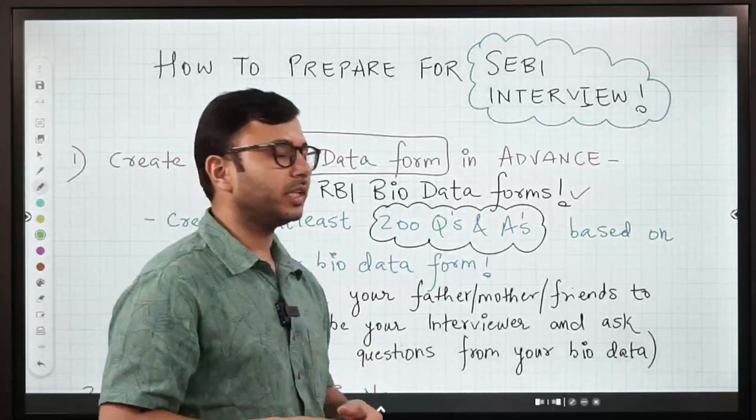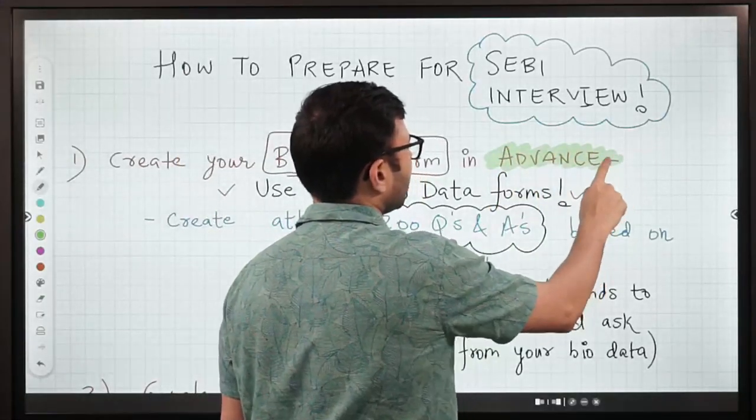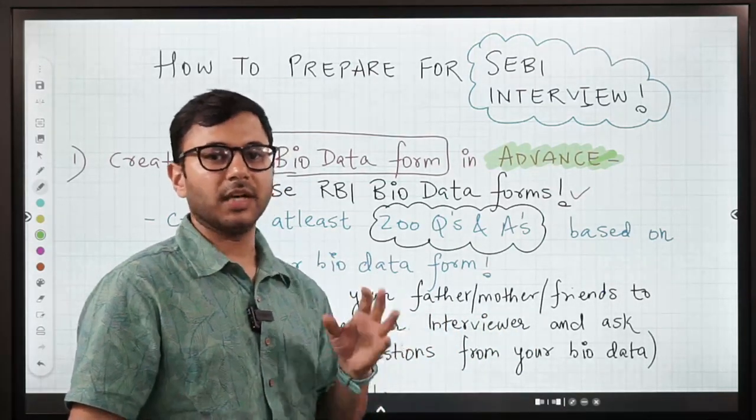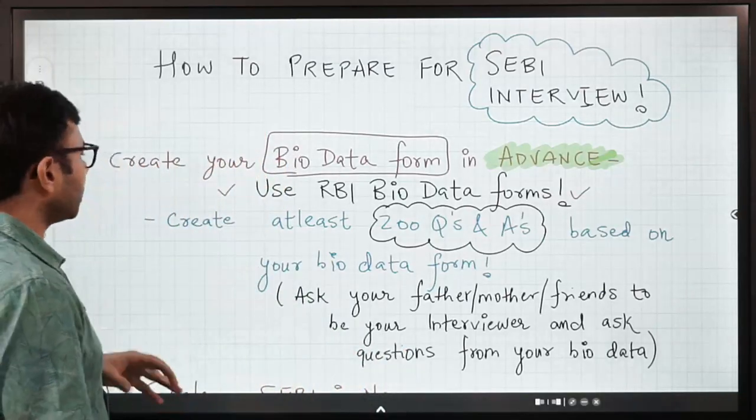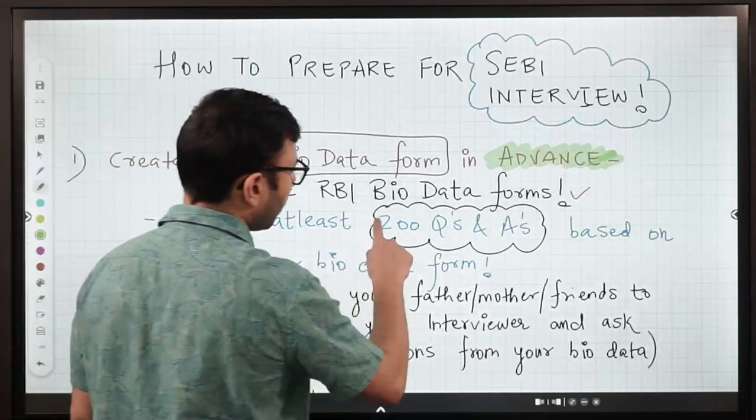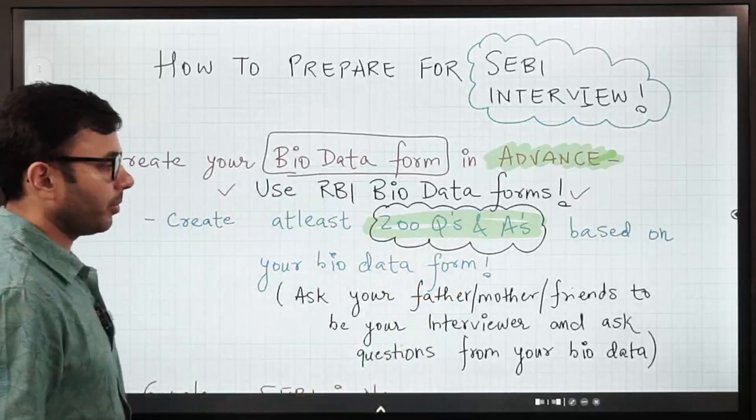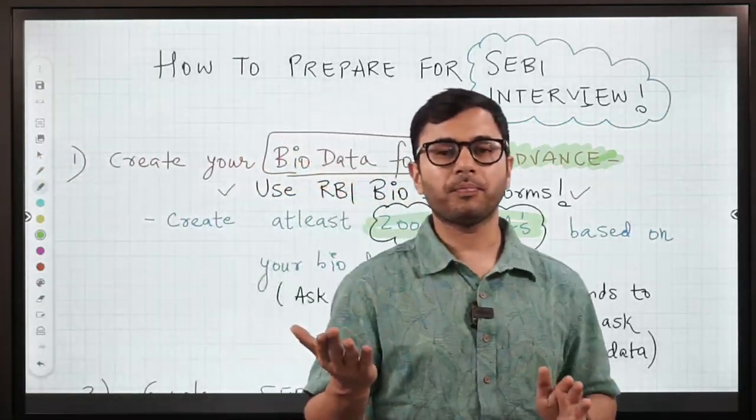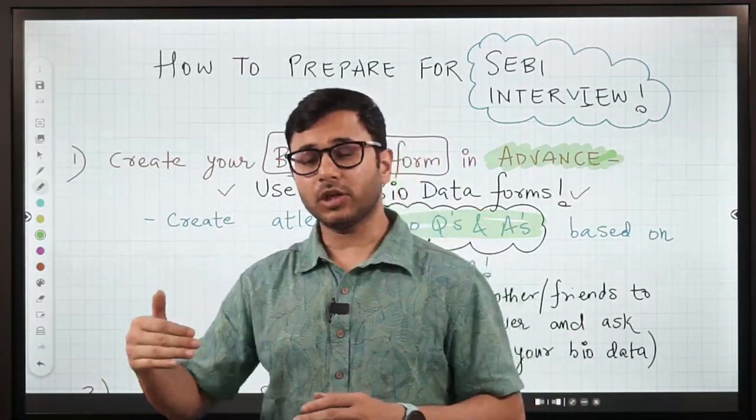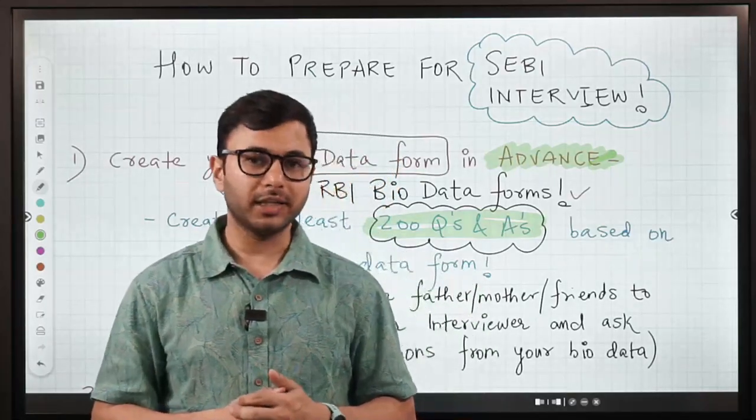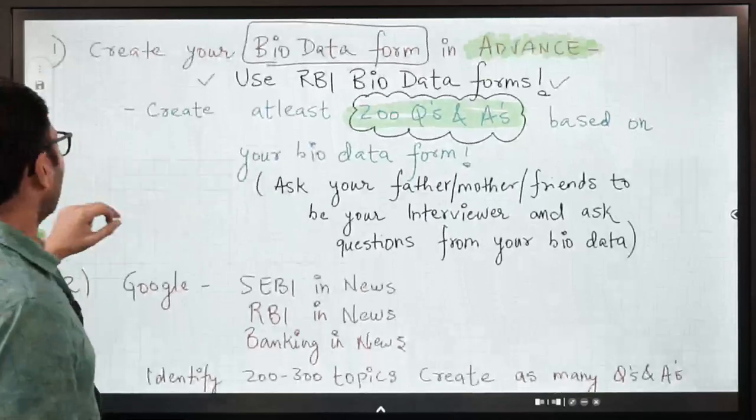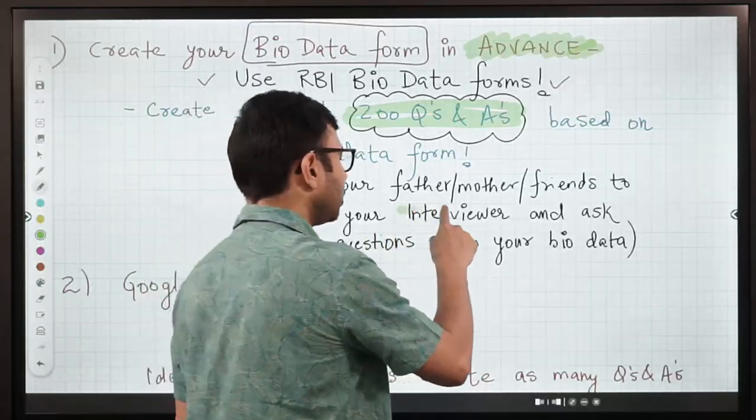It's not a one day job, it's not a two day job. What happens normally is students start preparing the bio data form once their name comes in the interview list and then they have only one or two odd days to prepare and they often make mistakes. So in order to stay away from that disaster, start creating your bio data forms now. What else? Create at least 200 questions and answers based on your bio data form. Ask your father or mother, ask your friends, ask your siblings to be your interviewer.